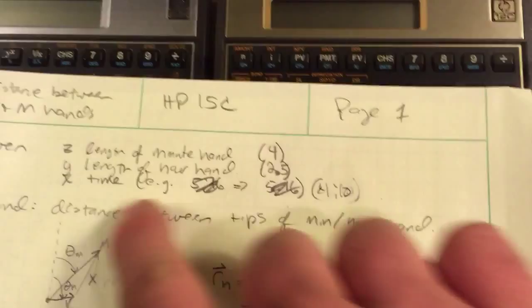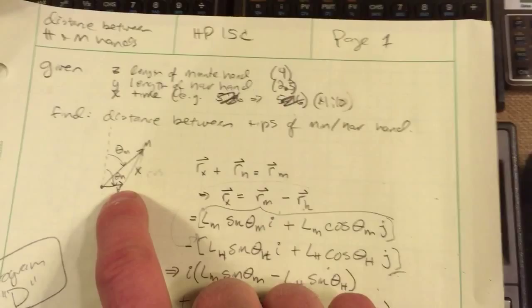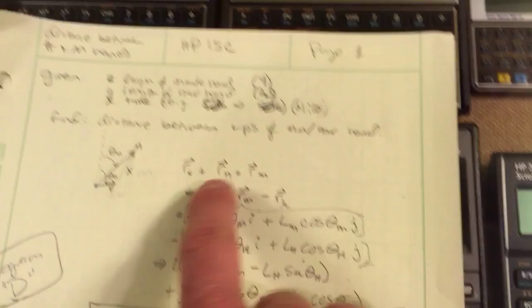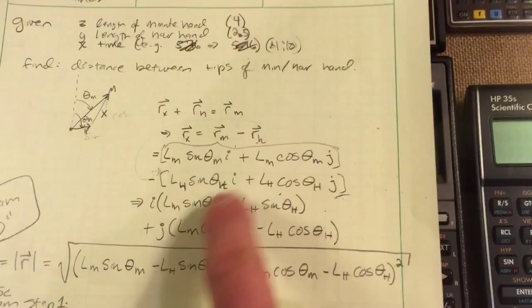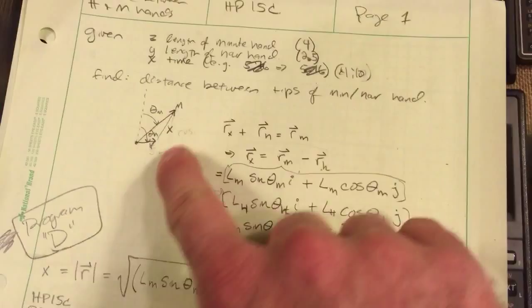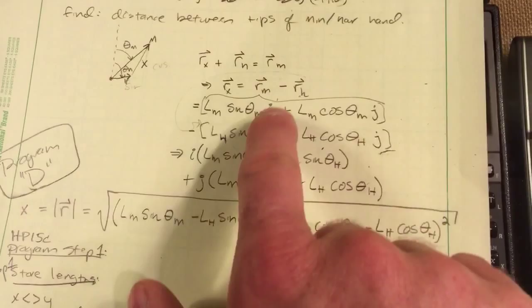The math is basically vector math. You have the minute and the hour hand with theta m and theta h for the angle coming from 12 o'clock down to where it is. You can see all the vector math to end up at what is this distance here. You've got to figure out what that vector is in i and j form at first given all the angles. You know the length of the minute and hour hand, the angle.